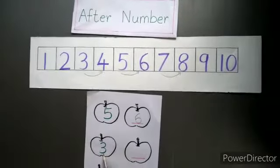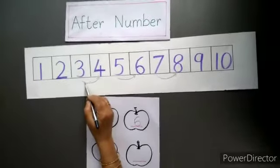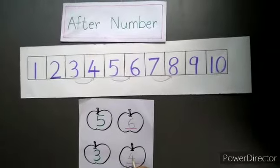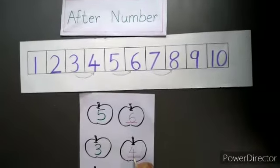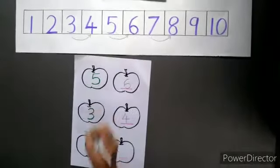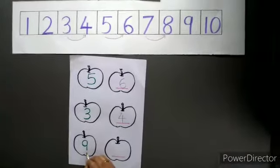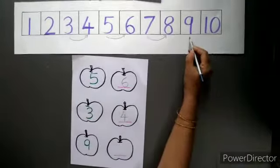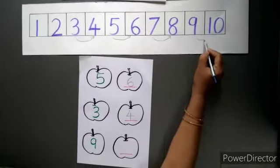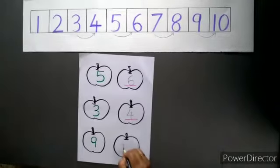The next number is 3. This is number 3, and after 3, it is number 4. So when we count forward from the given number, we get the after number. Now the next number is 9. So after 9 — where is 9? Here on number 9. The next number is 10. That means after 9, it is number 10.